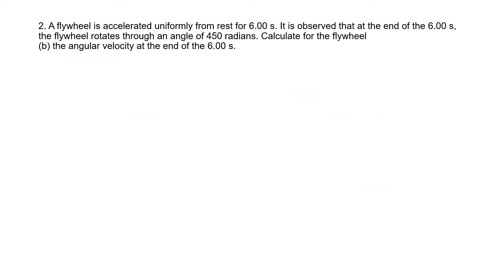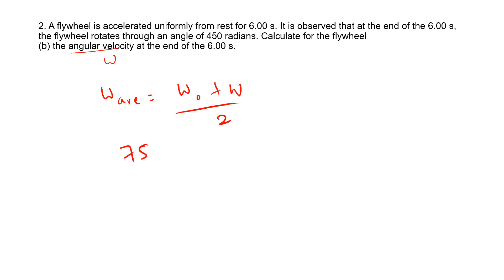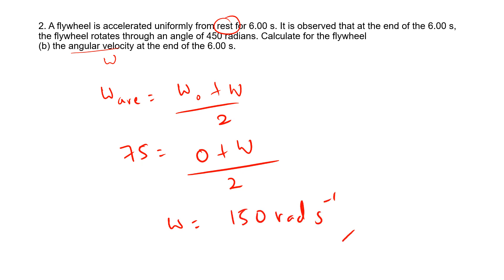Part (b) asks for the angular velocity at the end of the 6 seconds — the final omega. We know that omega_avg equals (omega initial plus omega final) divided by 2. Substituting: 75 equals (0 plus omega final) divided by 2, so omega final equals 150 rad s⁻¹. Note that 75 rad s⁻¹ was the average; 150 rad s⁻¹ is the final angular velocity.